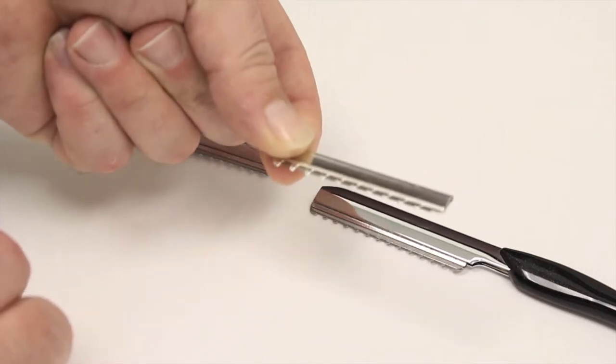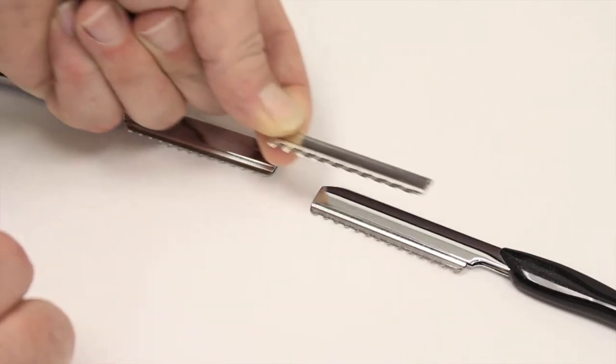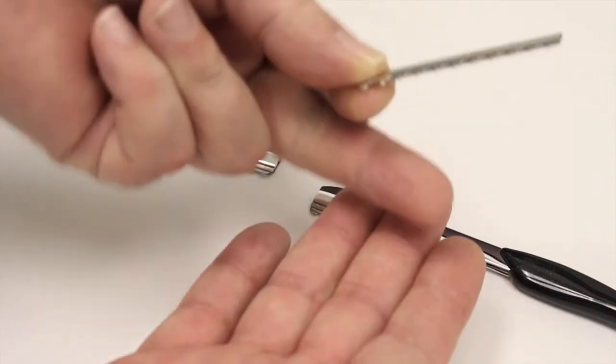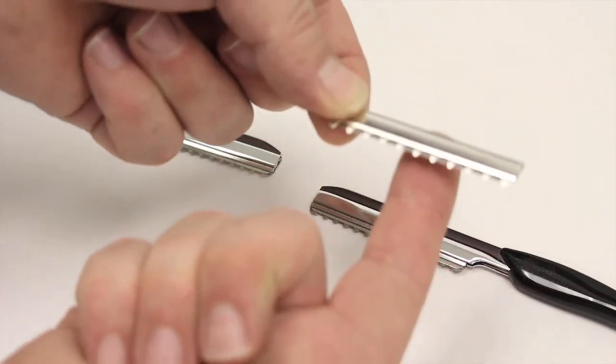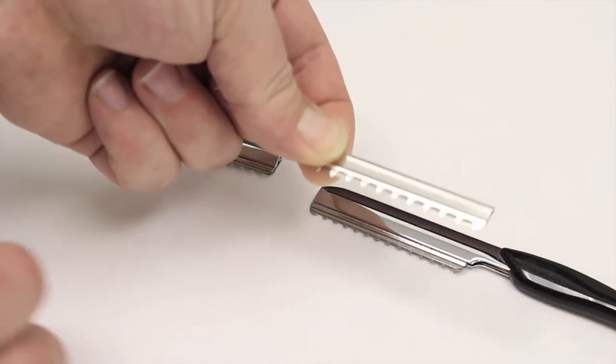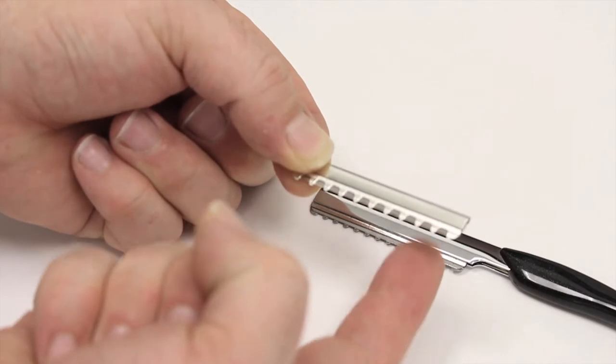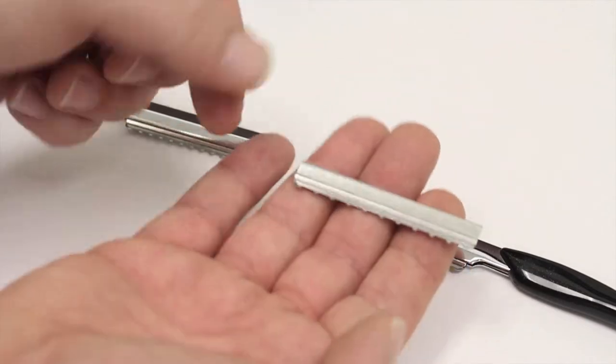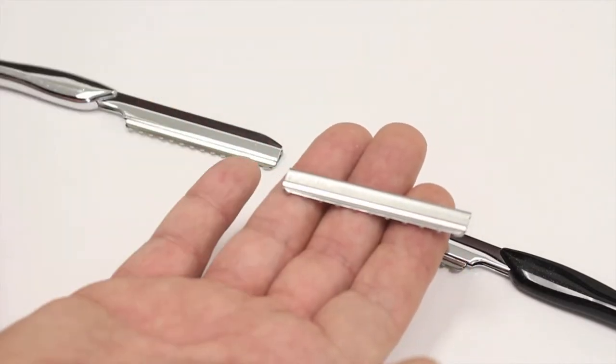So if this blade was applied into this razor, inserted this way, it would go hair, then blade, then guard. And what that means is the blade itself is unprotected from the guard. Therefore, the blade would cut off all of the hair or a lot more hair.